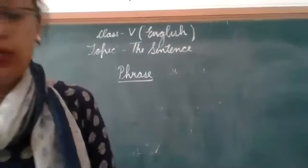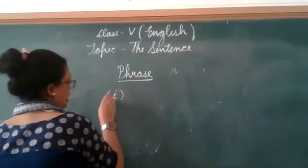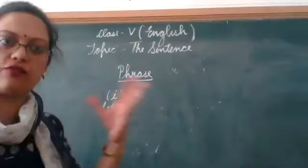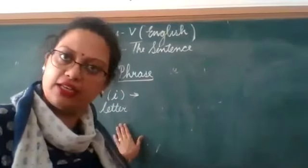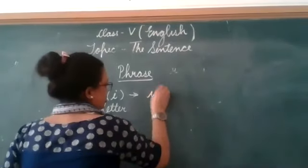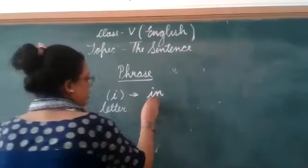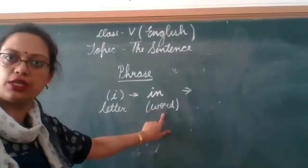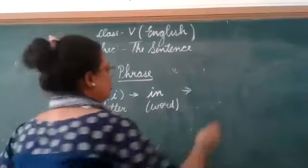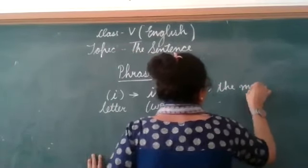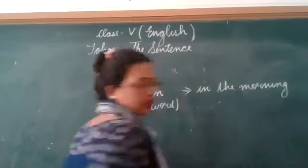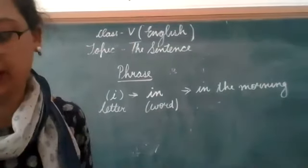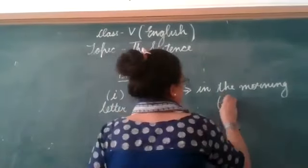Now before we begin — if I say 'I,' what is 'I'? 'I' is a single letter. Alphabets go from A, B, C, D, E, F, G, H, I — that is a letter. Now 'I' with two letters — that becomes a word. Right, after that: 'in the morning.' How many words are there? One, two, three — three words. So what is this? A group of words. Now what is this group of words? A phrase.